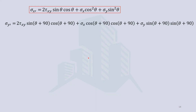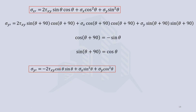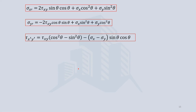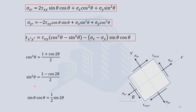Substituting theta plus 90 degrees instead of theta, and applying basic trigonometric identities — cos(theta + 90) equals minus sine theta, and sin(theta + 90) equals cos theta — we simplify the equation and obtain sigma y-dash in terms of the known stresses. We can also further simplify all the transformation equations using identities: cos² theta equals (1 + cos 2theta)/2, sin² theta equals (1 - cos 2theta)/2, and sin theta cos theta equals sin 2theta / 2.